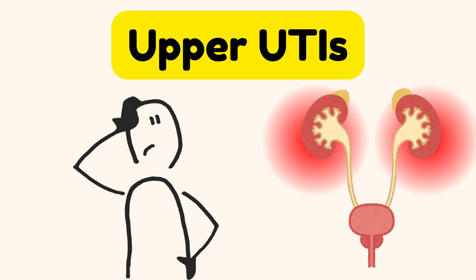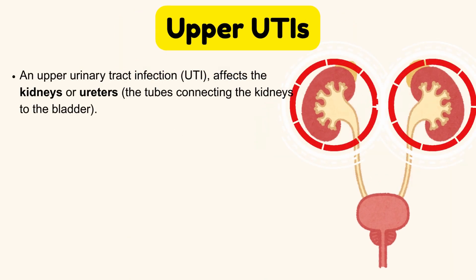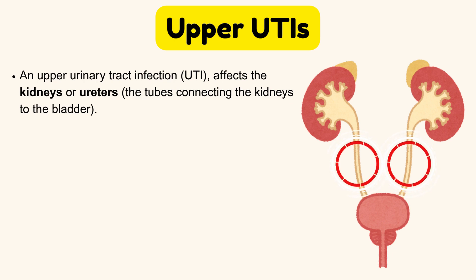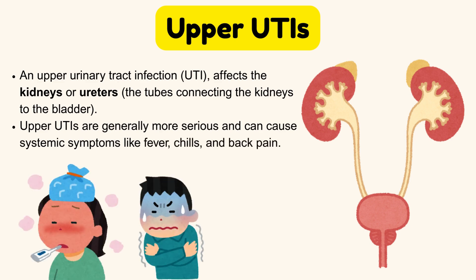First, we will discuss upper urinary tract infections. An upper urinary tract infection affects the kidneys or ureters — the tubes connecting the kidneys to the bladder. Upper UTIs are generally more serious and can cause systemic symptoms like fever, chills, and back pain.